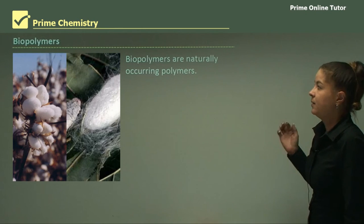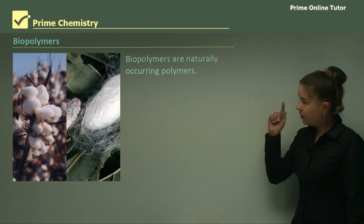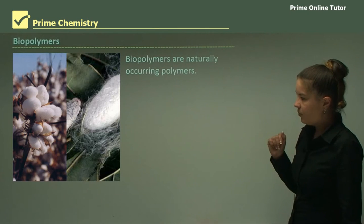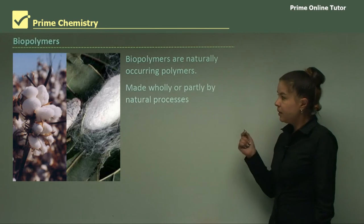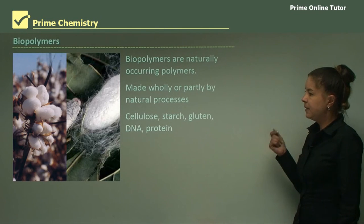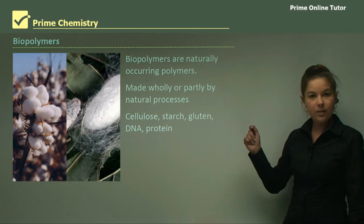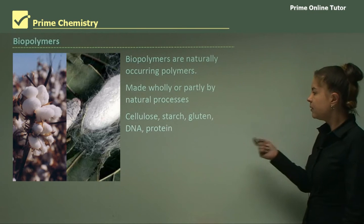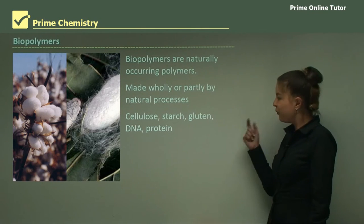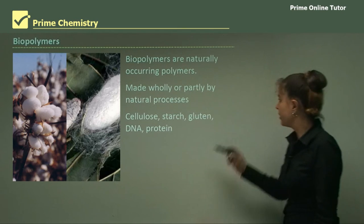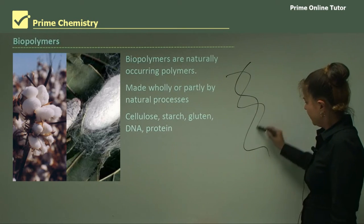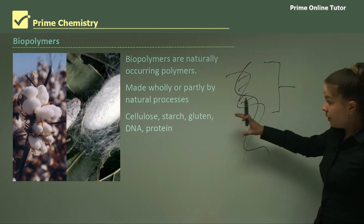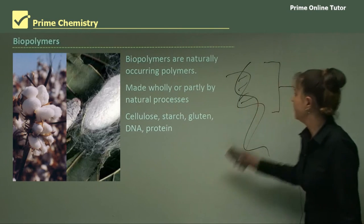Now biopolymers. Biopolymers are naturally occurring polymers. So if you think about the prefix bio, meaning living. So biopolymers, naturally occurring. They're made wholly or partly by natural processes. Examples are cellulose, starch, which are also made by plants and also a big part of our diet with things such as wheat and potatoes. Gluten, which some people can't have in their diet, gluten-free. DNA. And if you think about the structure of DNA, this is very simplistic. But basically DNA and proteins are just repeated units. That's why they're natural biopolymers.